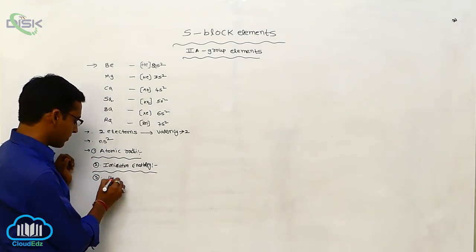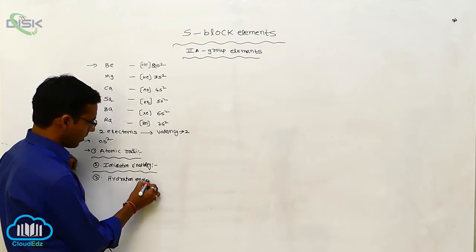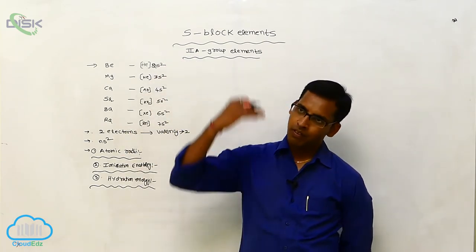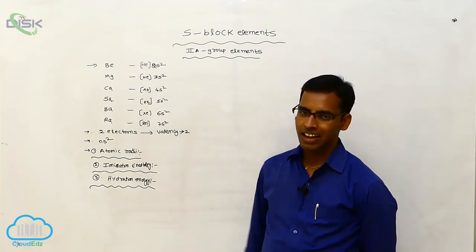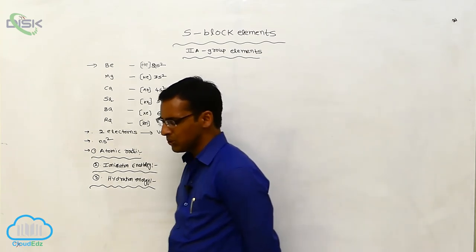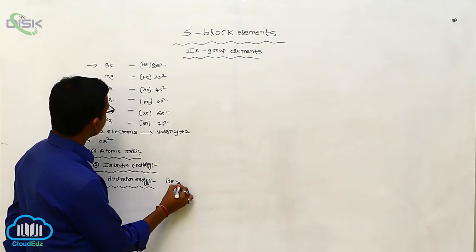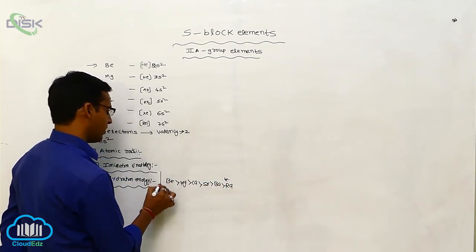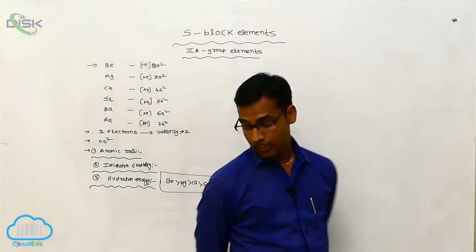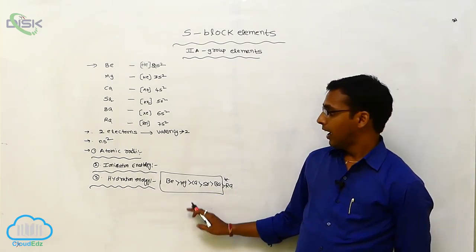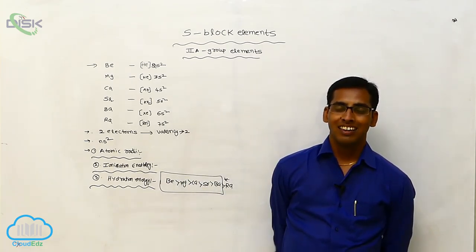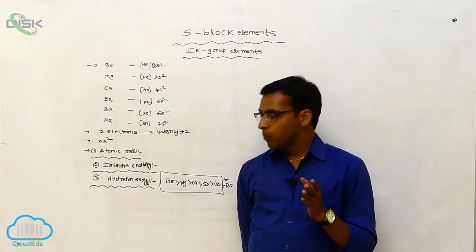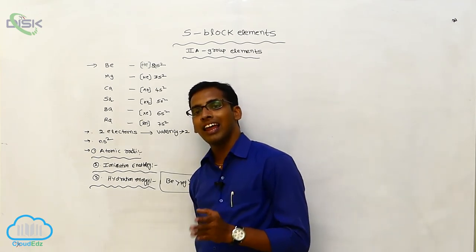The next property is hydration energy. In secondary group elements, hydration energy also decreases from top to bottom due to increasing atomic size. This character is similar to first group elements. The order is: beryllium > magnesium > calcium > barium > radium. Radium is radioactive so we generally don't consider it. Also, ionization enthalpy values of second group elements are less than those of first group elements, meaning alkali metals show higher ionization enthalpy values compared to alkaline earth metals.